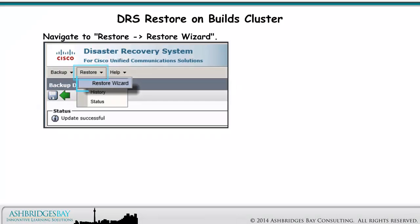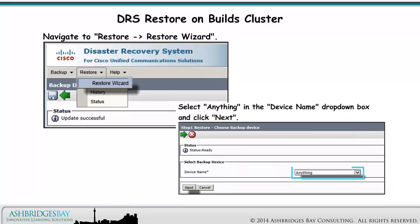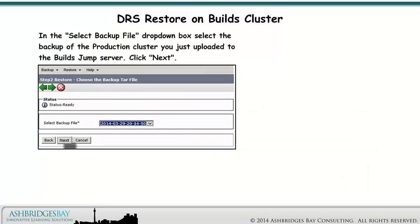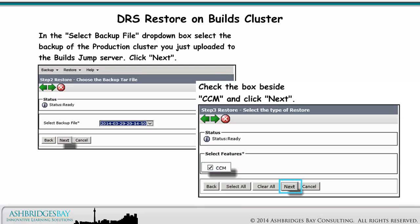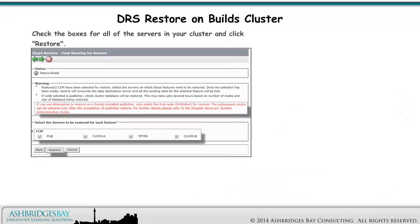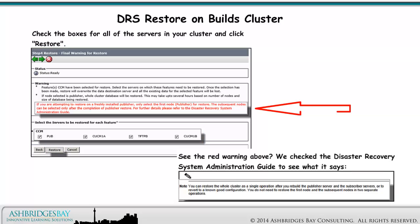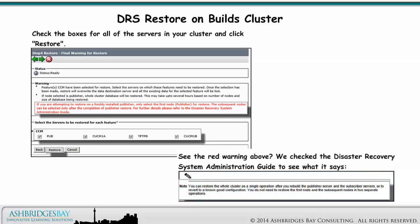Navigate to Restore, Restore Wizard. Select anything in the Device Name drop-down box and click Next. In the Select Backup File drop-down box, select the backup of the Production Cluster you just uploaded to the BuildsJump Server and click Next. Check the box beside CCM and click Next. Check the boxes for all of the servers in your cluster and click Restore. We checked the Disaster Recovery System Administration Guide — you can restore the whole cluster as a single operation after you rebuild the publisher and the subscriber servers.